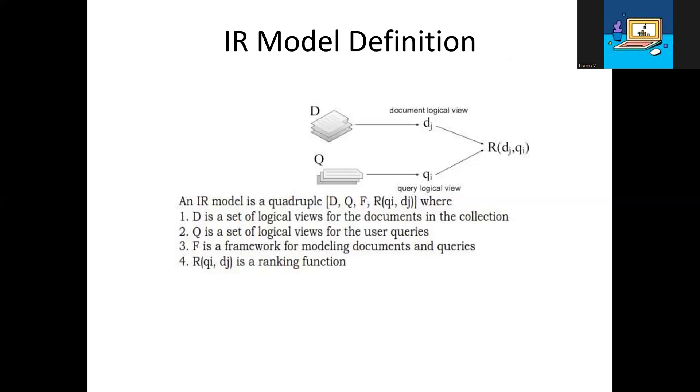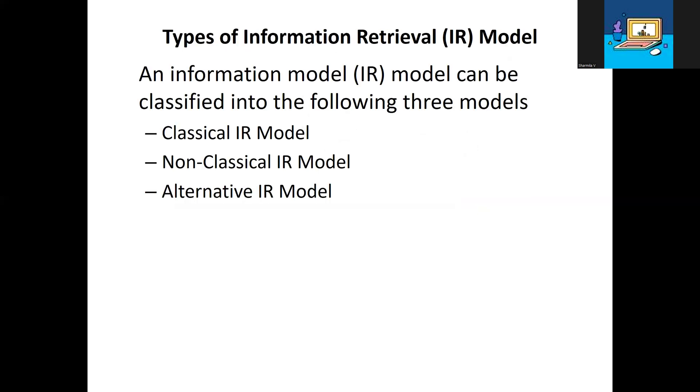Information retrieval models can be classified into three types: first is the classical IR model, second is the non-classical IR model, and third is the alternative IR model.